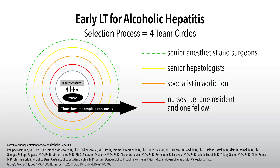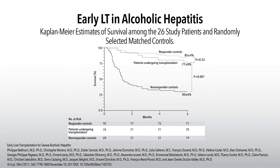The evaluation model used was comprehensive, starting with the immediate team — nurses, residents, fellows — then the hepatologist, then the addiction specialist, and finally a total joint decision between the surgeon, sociologist, and hepatologist. Everyone involved in the patient's care contributes a different perspective, which improves the evaluation of these patients.